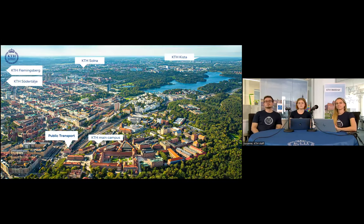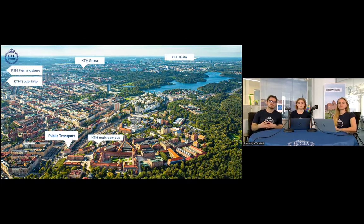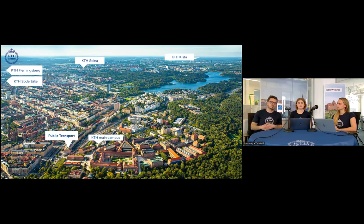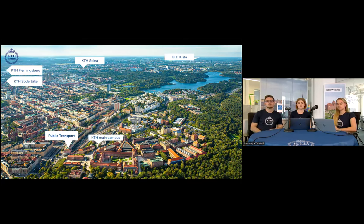Now a little about geography. KTH's main campus is very close to public transport — specifically the Tekniska Högskolan subway stop and the Roslagsbanan train, as well as many bus stops. KTH has five campuses spread around Stockholm: KTH Kista and KTH Solna in the northwest, and KTH Södertälje and Flemingsberg in the south.